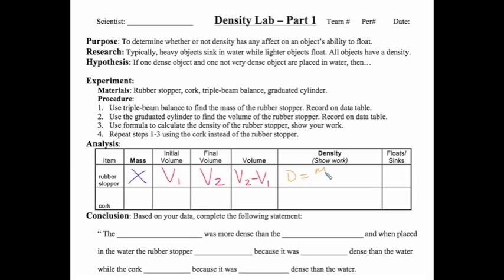Now we have mass and volume. Density is the mass divided by the volume. Make sure you put your unit: grams per milliliter.